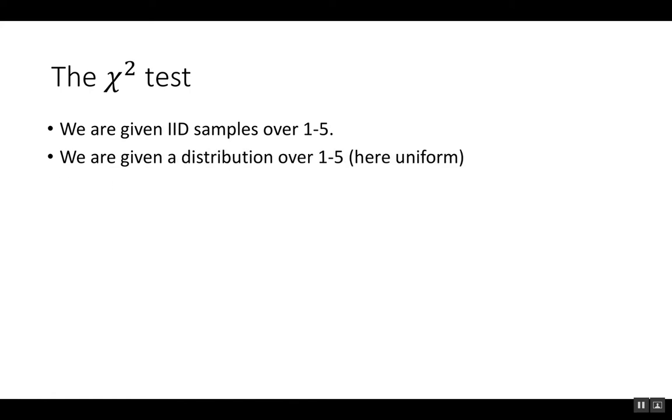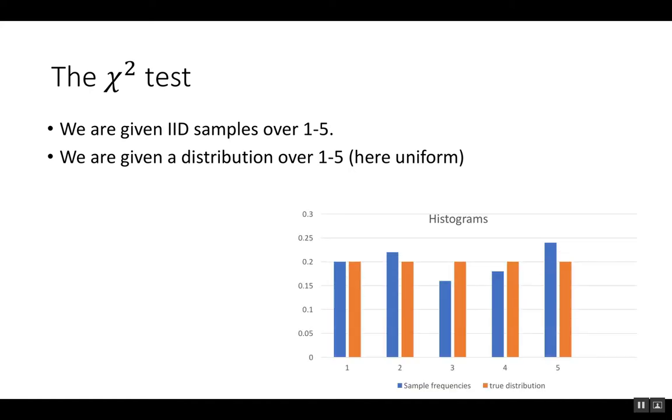We're also given a distribution over 1 to 5. Here we consider the uniform distribution. We can draw a histogram where the blue bars are the sample frequencies and the orange bars are the true frequencies.